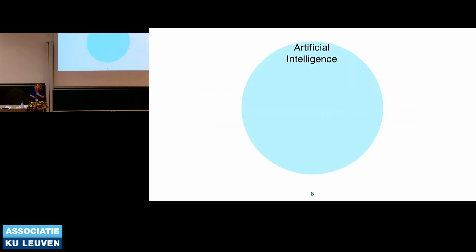Because the title mentions AI and we will use this term throughout the presentation, I want to quickly define it. My favorite definition: if someone presents you Python code, it's about machine learning, but if someone gives you a PowerPoint, it's AI. That holds, but we will try to be a bit more formal here.